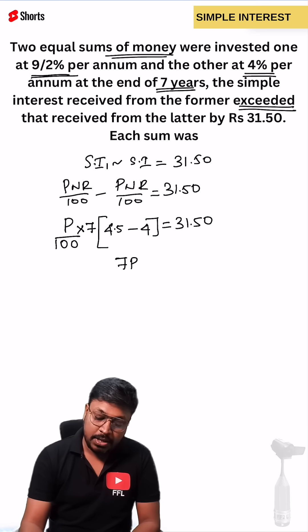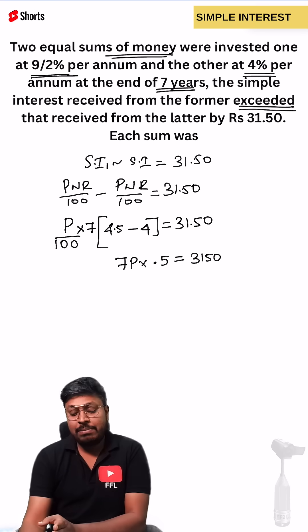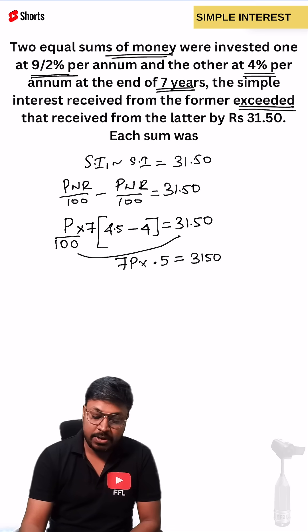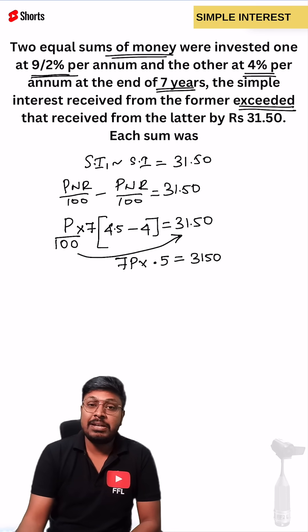7P equals - here you can see 4.5 minus 4 will be 0.5. So 0.5 equals to 3150. When we multiply by 100, this becomes 3150.